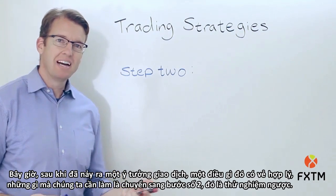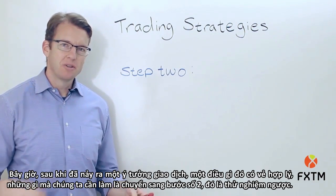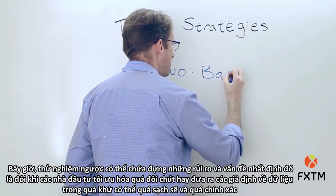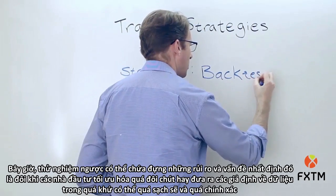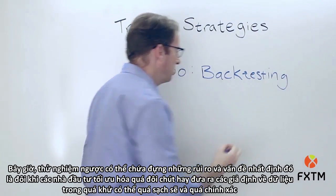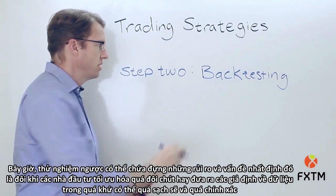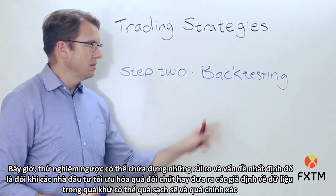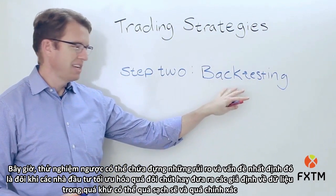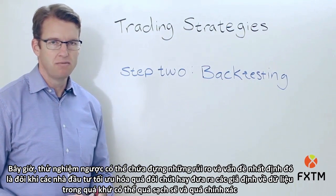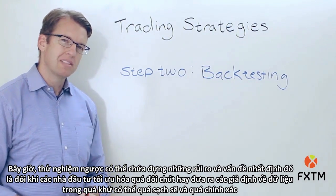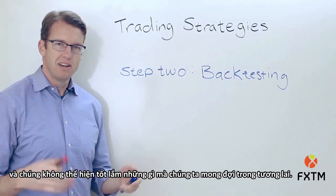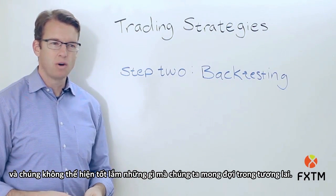Once we've come up with a trading idea — something that seems to make sense — we need to move on to step number two, which is backtesting. Backtesting is basically what we do when we go back into historical data and apply our rule set — our trading idea — to that historical data to see how would that have worked in the past. Backtesting can contain certain risks in that investors sometimes over-optimize, or they make assumptions about historical data that are so refined and precise that they're not very good representations of what we should expect in the future.